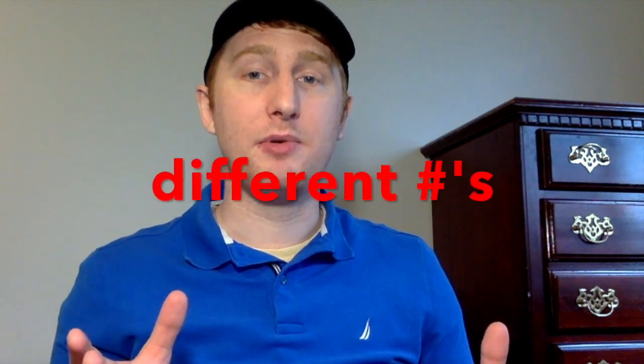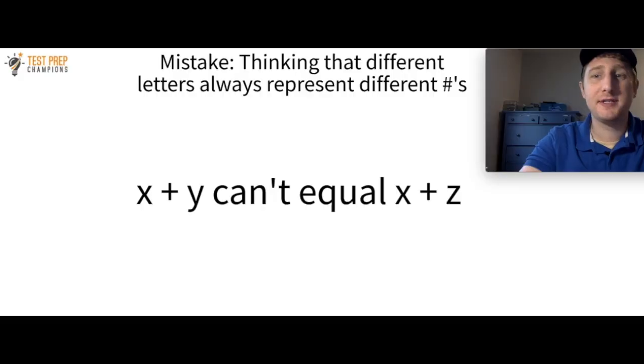Thinking that different letters always represent different numbers is something that you don't want to do on your test. So for example, the mistake would be thinking that X plus Y and X plus Z can't be the same number. So when would this be the case? Well, let's say that Y is equal to two and Z is also equal to two. Then X plus Y and X plus Z would be the same number. So this definitely can happen. So don't think that a letter is always going to be a different number.